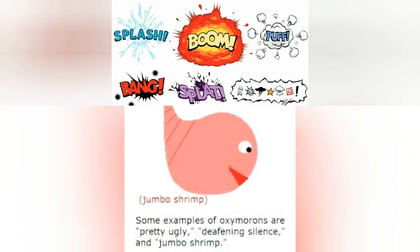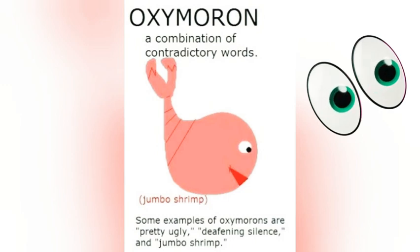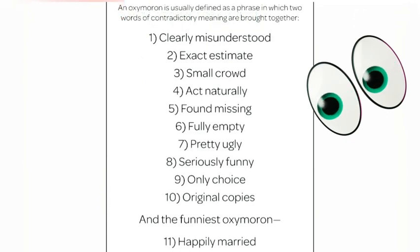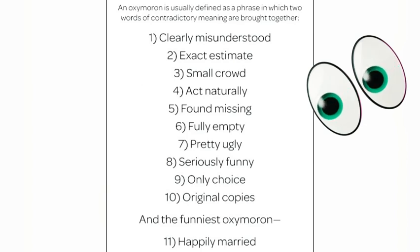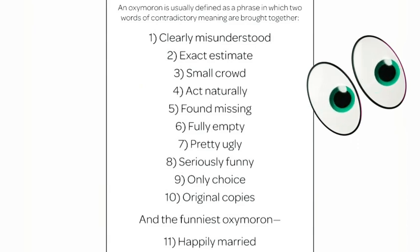The next figure of speech is an oxymoron, which means a combination of two contrary words. For example, 'clearly misunderstood' or 'only choice' — these are examples of oxymorons, a combination of two opposing words.